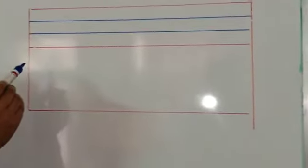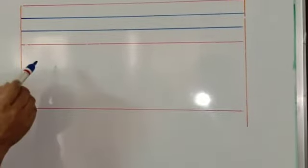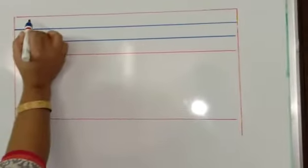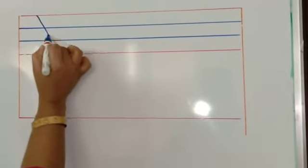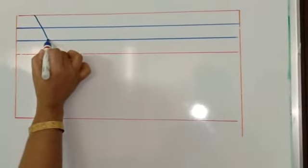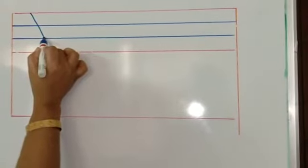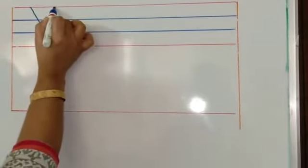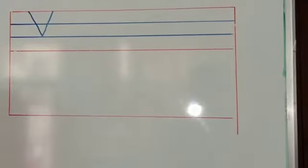Let's begin the written part of the uppercase V. Keep your pencil here. Draw a slant line. Bring it to the third line. And once again you have to draw one more slant line taking it back to the first red line.